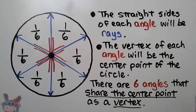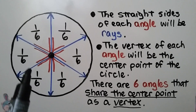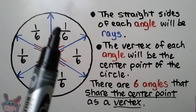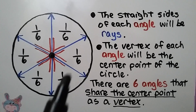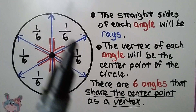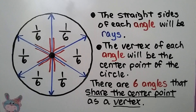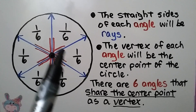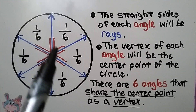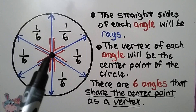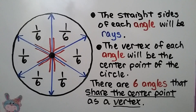There are six angles that share the center point as a vertex in this circle. We have one-sixth, one-sixth, one-sixth, all the way around — that's six parts. Each part is one of six, so it's one-sixth. We have six angles, and they all share the center point as a vertex.